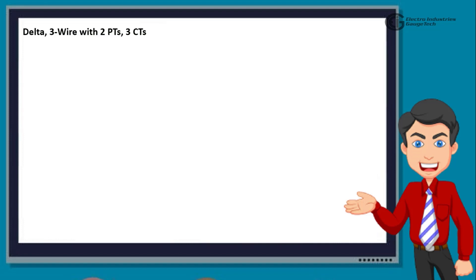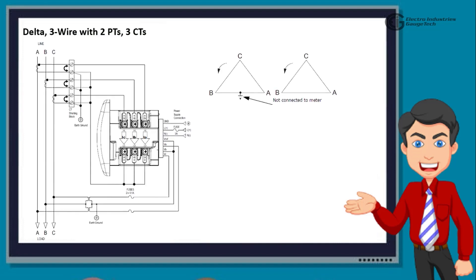Next, we move to Delta, 3 wire with 2 PTs, and 3 CTs. This diagram shows 3 phase, 3 wire Delta system with 2 potential and 3 current transformers. When using this wiring, select 2 CT-Delta from the Shark Meter's front panel display.